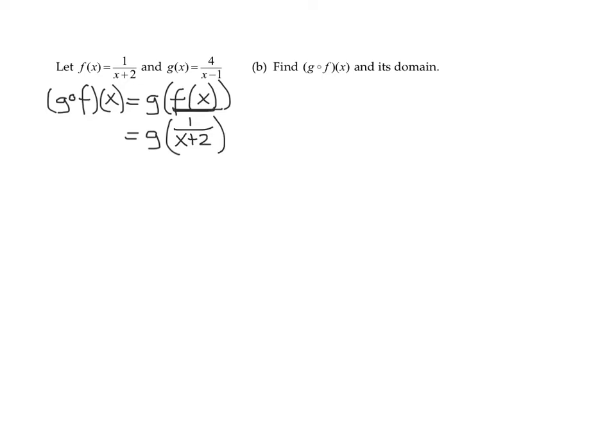So remember, if you get confused at this point because I have x's here and x's up here, all you have to think about is, in my definition of g, it's g of something is 4 over that something minus 1. And who am I going to put in that something? 1 over x plus 2.